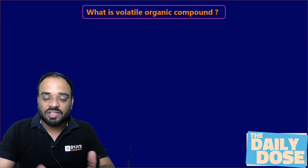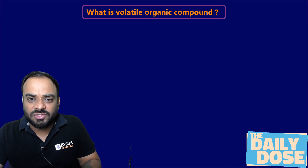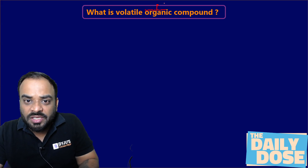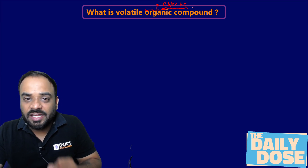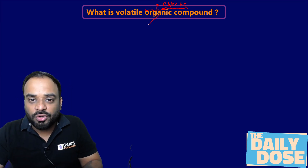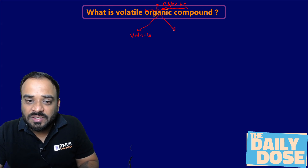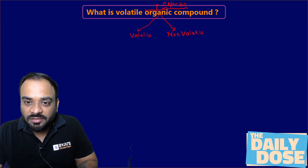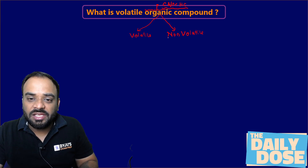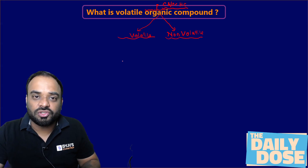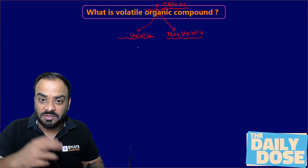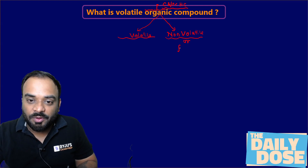So let's understand what is basically volatile organic compound. First we need to discuss what is organic compound. As you know, organic compounds are those compounds in which carbon and/or hydrocarbon is present. Now these organic compounds are of two types basically: one is volatile in nature and the second one is non-volatile in nature. Volatile compounds can convert themselves into gas, but non-volatile compounds are also known as fixed type of organic compound.